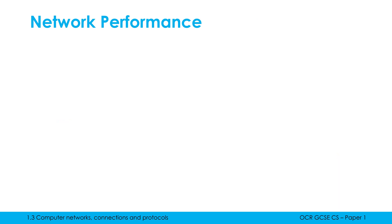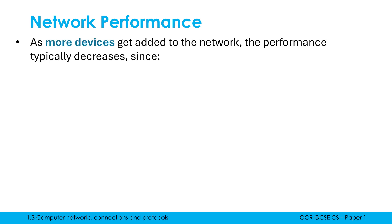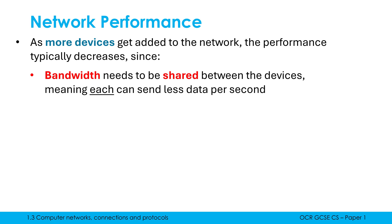Another important performance factor is how many users you've got connected to the network. Typically, as more devices get added, performance will decrease, and there are multiple reasons why this is the case. The first one relates to bandwidth — bandwidth has to get shared between all the devices connected to the network, which means each device can send less data per second, so it feels slower for those individual devices.